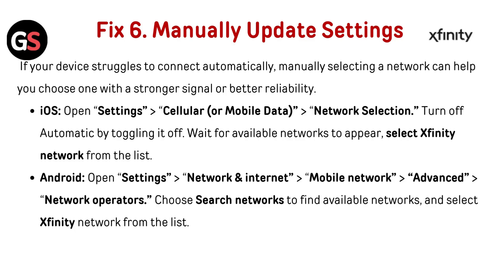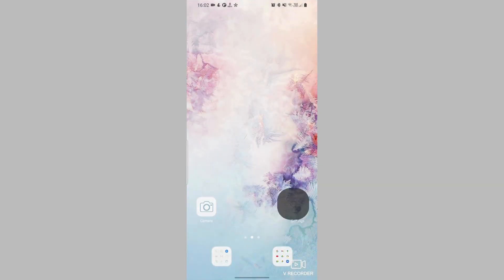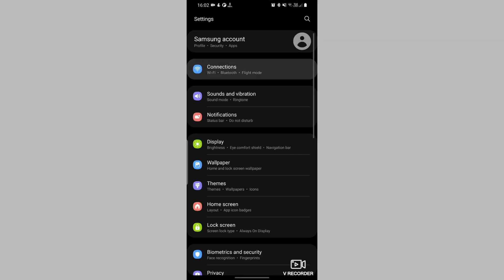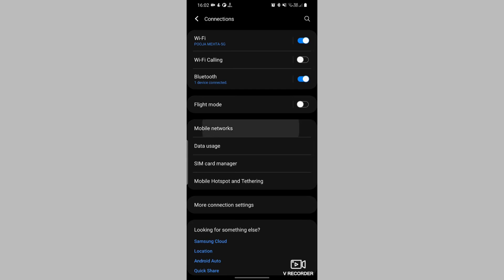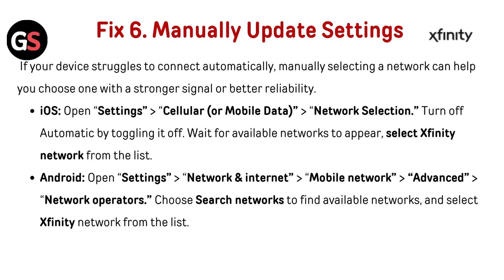Fix 6: Manually update network settings. If your device struggles to connect automatically, manually selecting a network can help you choose one with a stronger signal or better reliability. For iOS, open Settings, go to Cellular or Mobile Data, then Network Selection, and turn off Automatic. Wait for available networks to appear and select the Xfinity network from the list. On Android, open Settings, go to Network and Internet, tap Mobile Network, go to Advanced, then Network Operator, and choose Search Networks to find and select the Xfinity network.